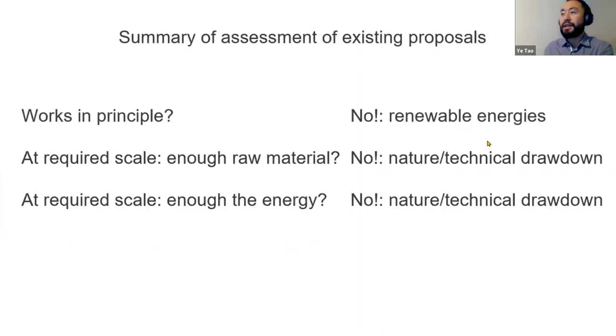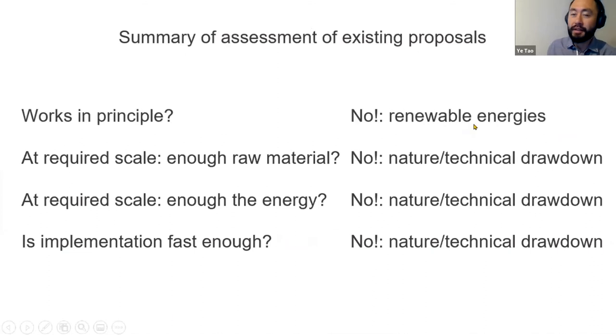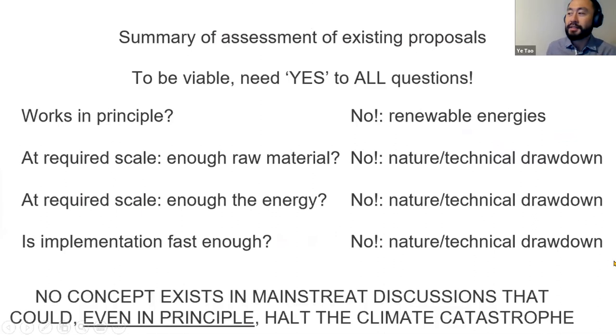Essentially, we have examined by these criteria that the mainstream proposals of renewable energy and natural and technical ways to draw down are not solutions at all. In fact, there doesn't exist a single proposal in the mainstream discussions that could even in principle halt the climate catastrophe.